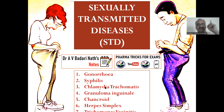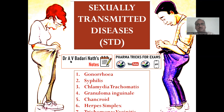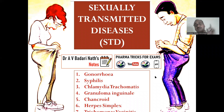The seven diseases are: gonorrhea, syphilis, chlamydia trachomatis, granuloma, chancroid, herpes simplex, and trichomonas vaginitis. All these seven diseases are transmitted through sex — mainly 99% through sex only.